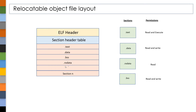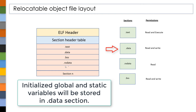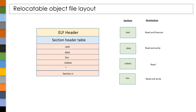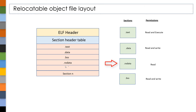The program which we write will be stored in the .text section. This section has only read and execute permissions — we don't have write permission to this section. Next, we have a .data section where all initialized global and static variables will be stored. The .data section has both read and write permissions. In .rodata, we store information such as string literals. We can also call this read-only data, meaning we don't have permission to write into .rodata.